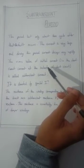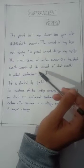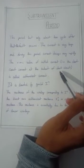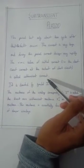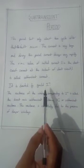The RMS value of initial current, i.e. the short circuit current at the instant of short circuit, is called Subtransient current. It is denoted by symbol I double dash.